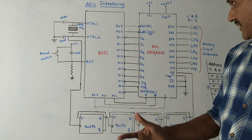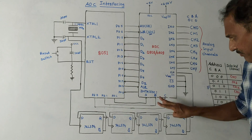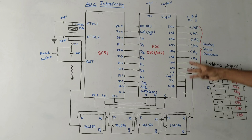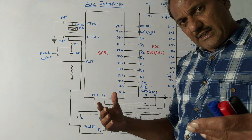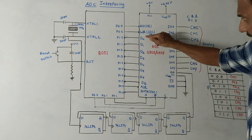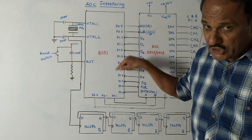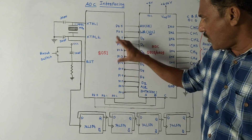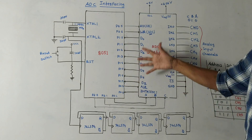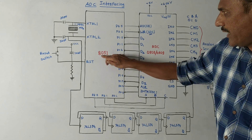After conversion, the digital data will be available at pins D0 to D7. We use three channel enable pins because we have eight channels. After converting the analog signal, the digital bits are available at pins D0 to D7. These pins are connected to Port 1 of 8051, specifically P1.0 to P1.7 — though you can also use Port 0. After the conversion, this data will be available to the 8051.